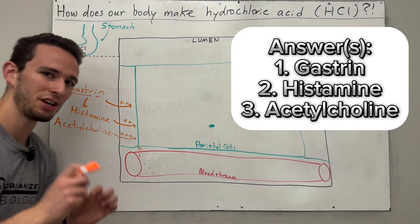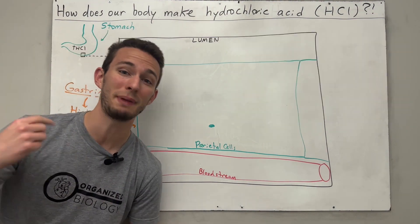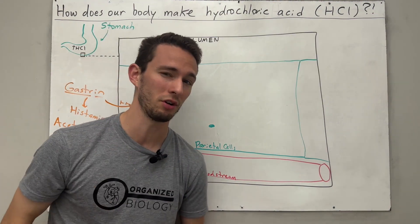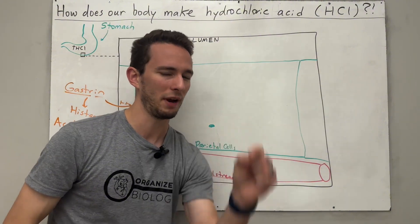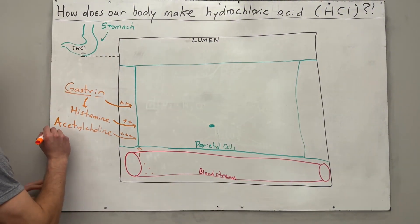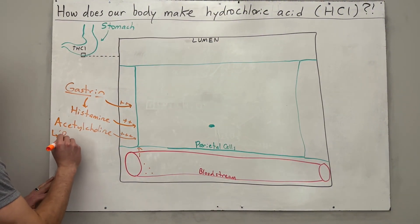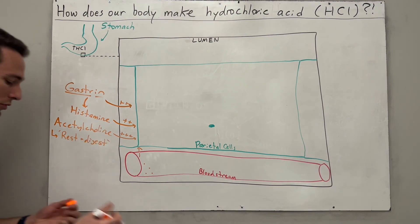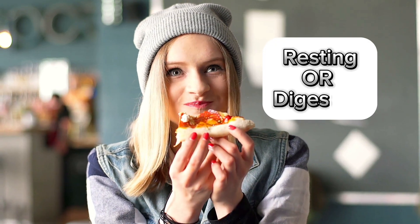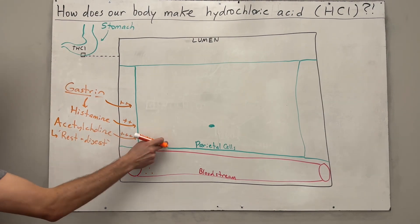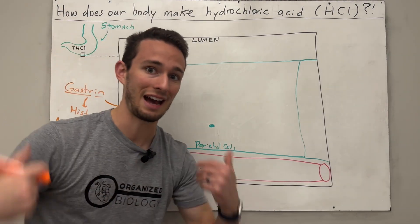Now acetylcholine is actually a neurotransmitter that is produced by the parasympathetic division of the nervous system. If you want to learn more about that, you can hop over to here. But parasympathetic, I always think of neurons that like to trigger the body to rest and digest. So if your body's getting signals that you're in a resting or digesting phase, this neurotransmitter will stimulate these parietal cells directly to start secreting acid.